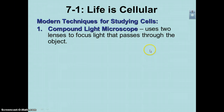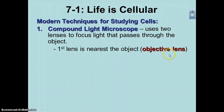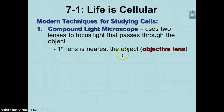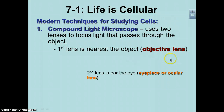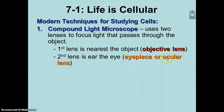The basic thing to do when you want to learn about cells is you're going to use a compound light microscope. In a compound light microscope, you're going to use two lenses to focus the light that will pass through the object. The first lens that you'll look through is the objective lens, and this is called the objective lens because it's closest to the object that you are looking at — for example, whatever's on the slide. The next lens is the one that's closest to your eye, creatively called the eyepiece or the ocular lens. Ocular refers to eye.